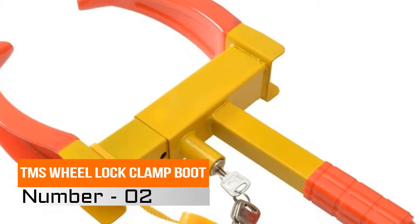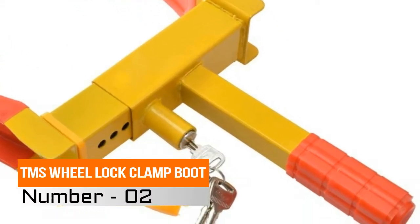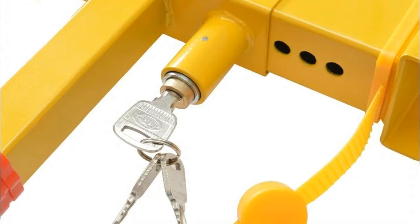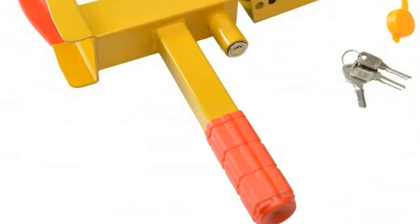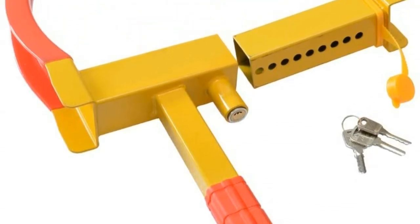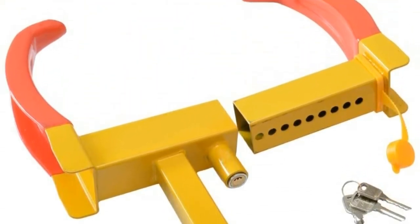Number 2, TMS Wheel Lock Clamp Boot. This high-quality heavy-duty lock clamp is the perfect anti-theft device that will completely immobilize a wheel from rotating or turning. This lock is very lightweight and easy to operate.